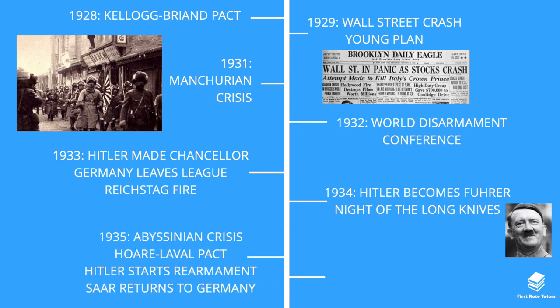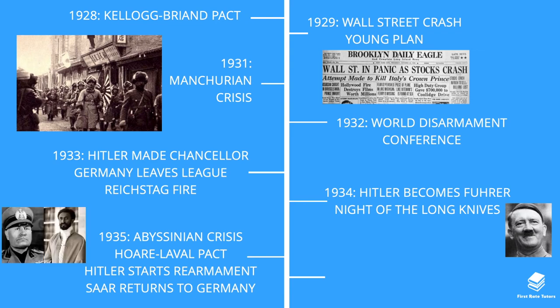In 1935 there was the Abyssinian Crisis. Mussolini decided to invade Abyssinia, a region now known as Ethiopia, following skirmishes between Italian and Abyssinian soldiers used as a pretext for invasion. Abyssinia's Emperor Haile Selassie turned to the League for help. The League responded by imposing weapon sanctions on both Abyssinia and Italy, which actually did more harm to Abyssinia, and ultimately Italy overcame them.